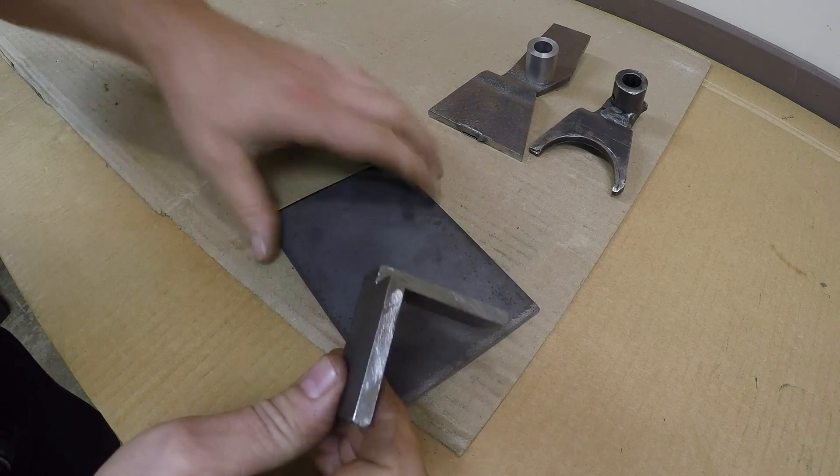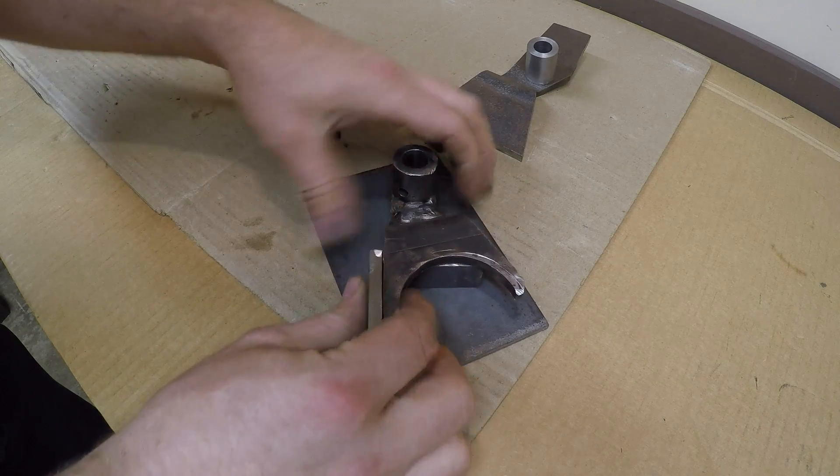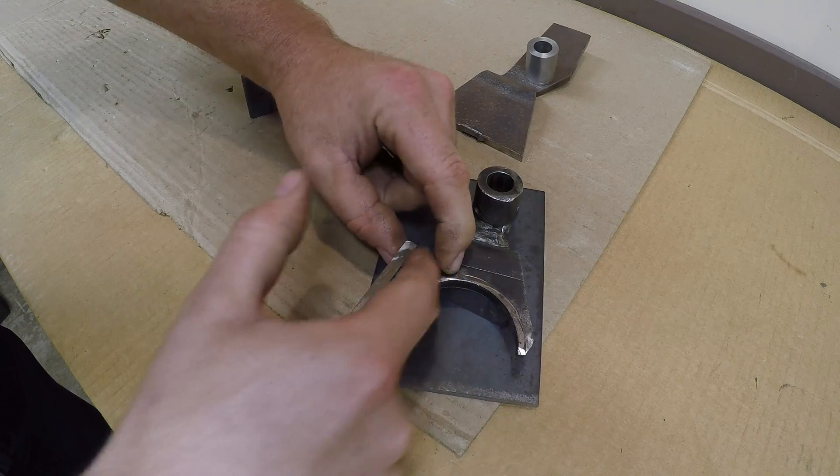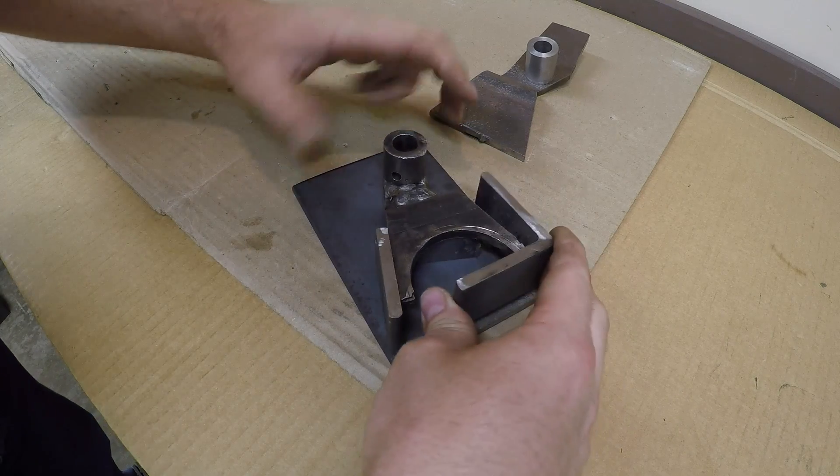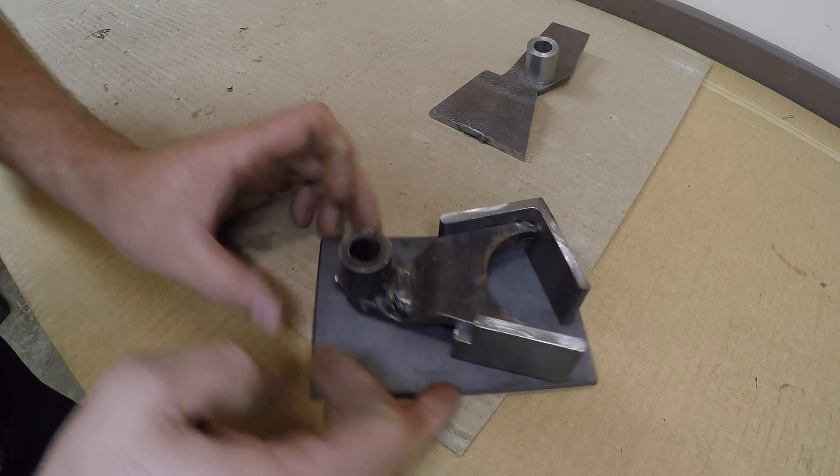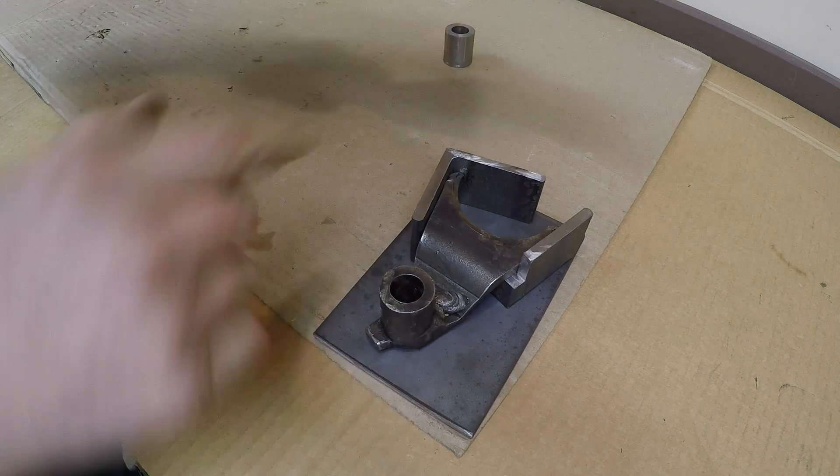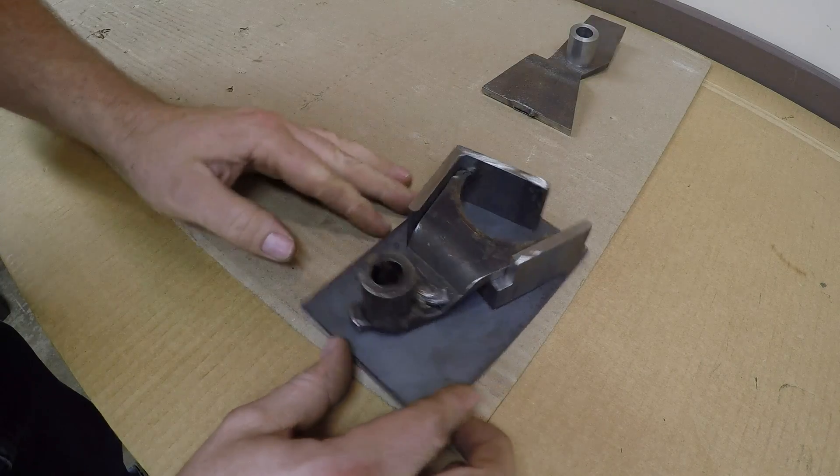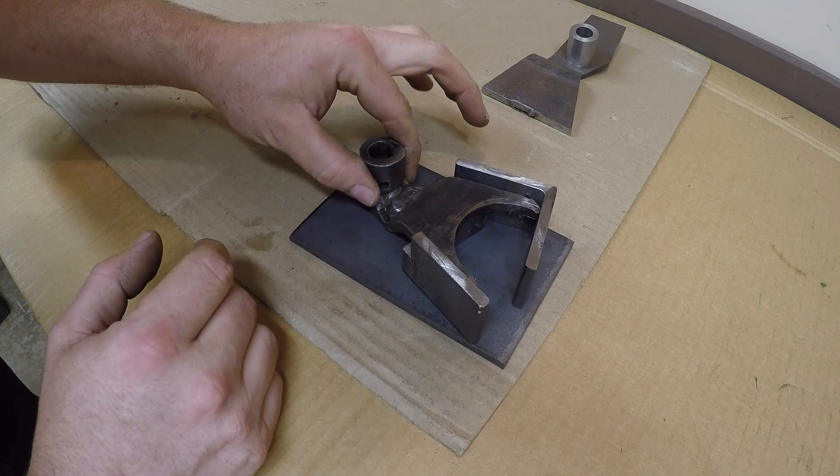The short leg will go underneath the fork and provide support. The taller leg will align down one side to help locate it. The other piece of angle goes on like that. Together they should cage that shift fork and hold the new blank where I want it.